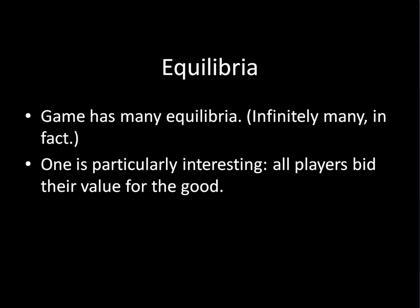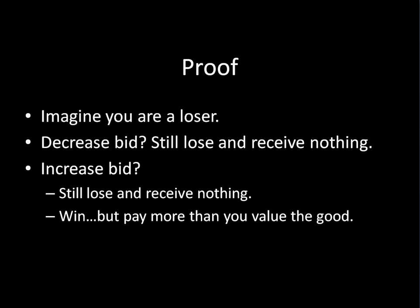This is an equilibrium — to see why, we just have to consider two cases: what happens if you're a winner and what happens if you're a loser, and show that in either case you do not have any profitable deviations. If you're a loser and you decrease your bid, you were losing before and now you're shrinking your bid, so you're still losing and receiving nothing. So there's no profitable deviation there.